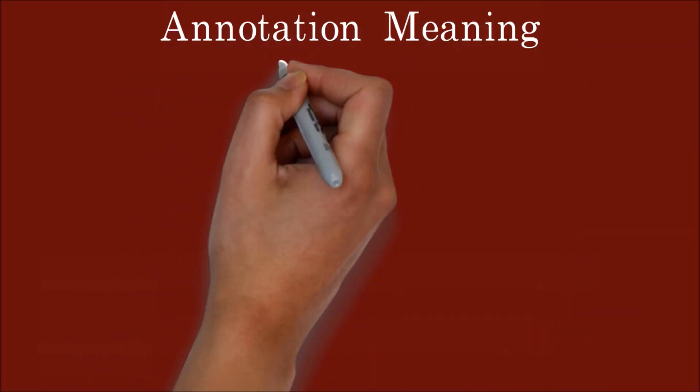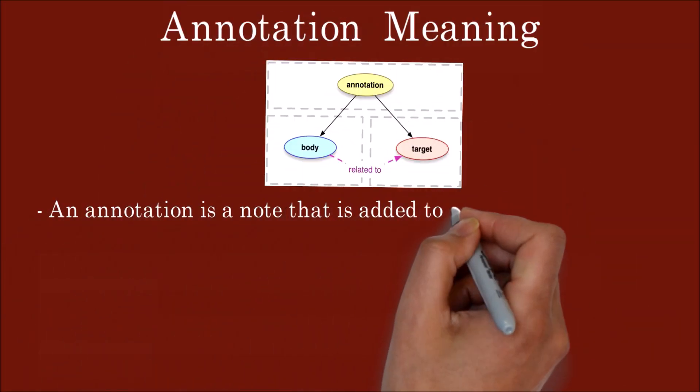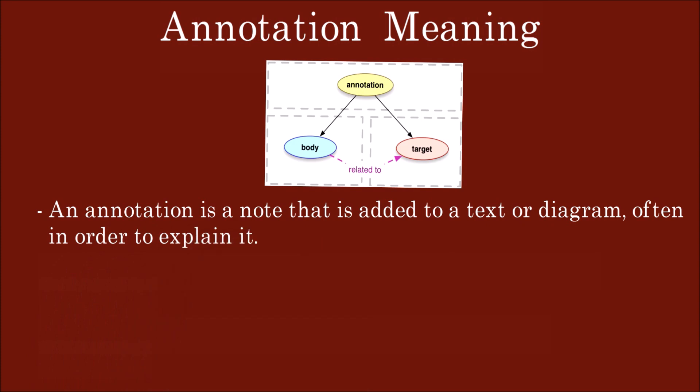Annotation. Meaning of annotation: An annotation is a note that is added to a text or diagram, often in order to explain it.